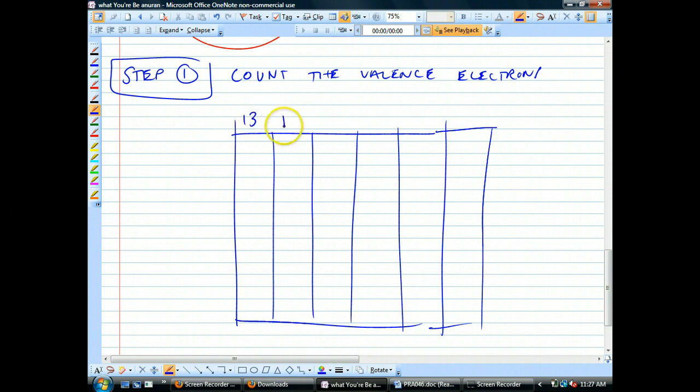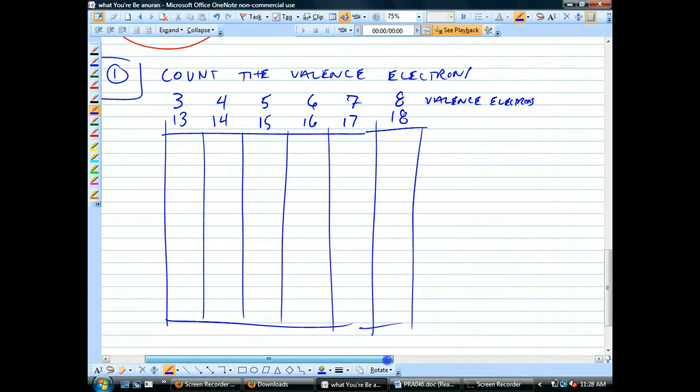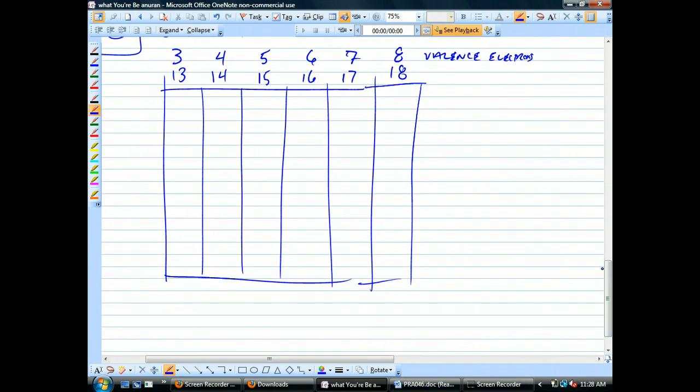Actually all we need is the p block because we're always dealing with non-metals here. So I'm just going to draw the p block only, the last 6 columns. This is column or group 13, group 14, 15, 16, 17, and 18. The number of valence electrons are 3, 4, 5, 6, 7, and 8 valence electrons. So all you've got to do is locate the element on the periodic table and you can easily figure out how many valence electrons it has. So boron, carbon, nitrogen, oxygen, fluorine, neon. Fluorine would have 7, oxygen would have 6. So oxygen has 6 valence electrons, for example.